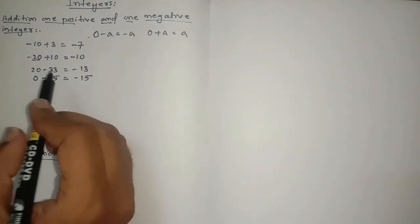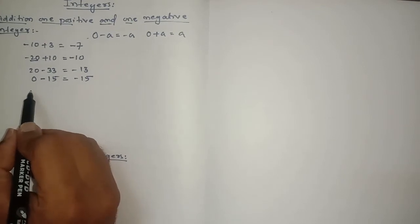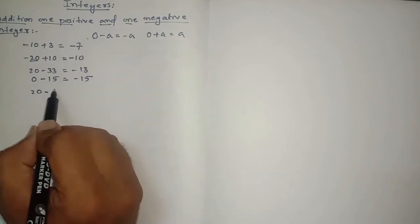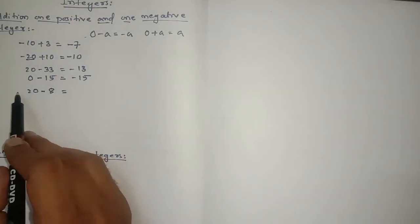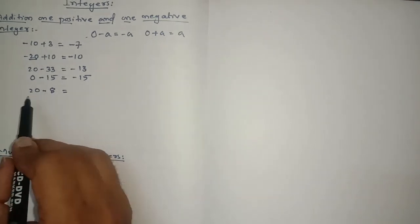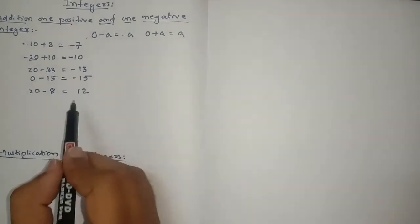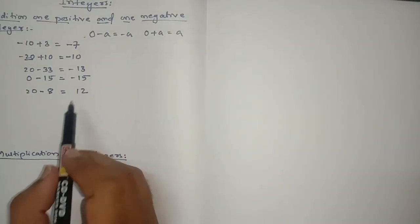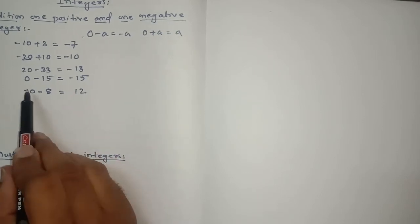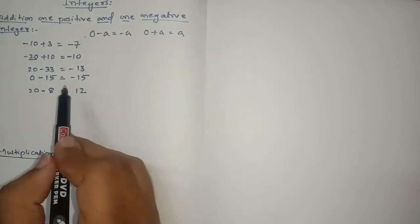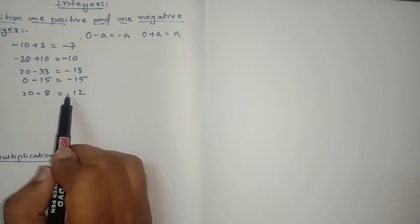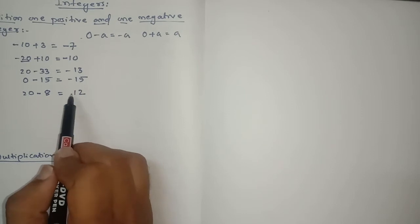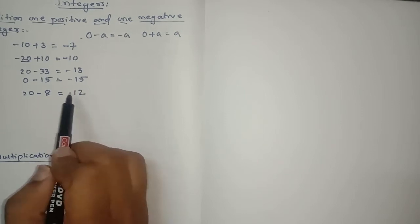Let's see some more examples. Suppose the question is 20 minus 8. Signs are different so we subtract: 20 minus 8 is 12. The sign is plus because the sign of the greater number is plus. If the plus sign is not mentioned before a number, it is still considered positive — there is no need to explicitly write the plus sign.